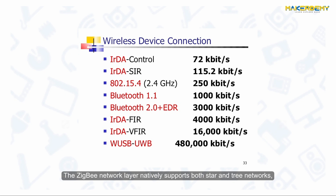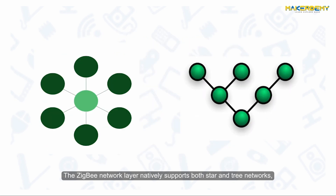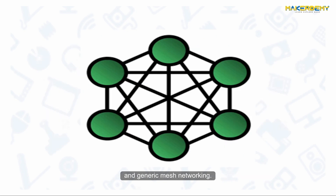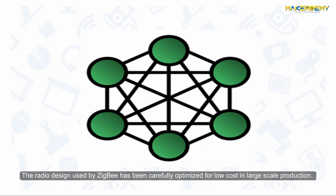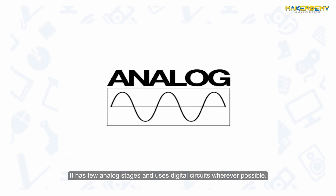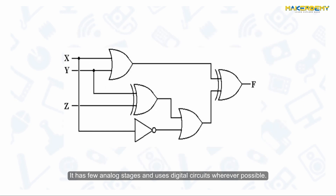Zigbee's network layer natively supports both star and tree networks and generic mesh networking. The radio design used by Zigbee has been carefully optimized for low cost in large-scale production. It has few analog stages and uses digital circuits wherever possible.